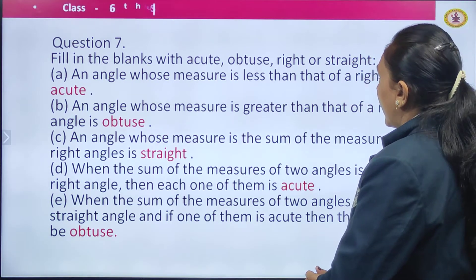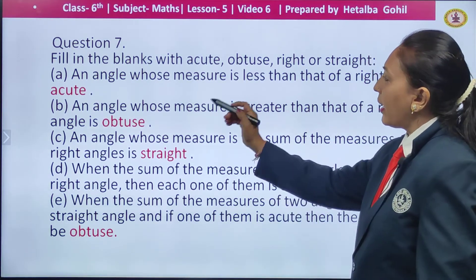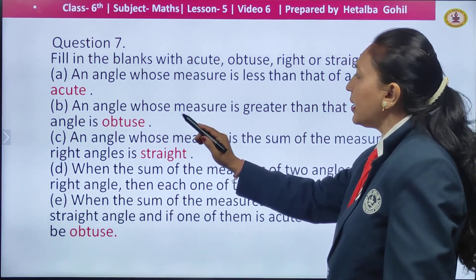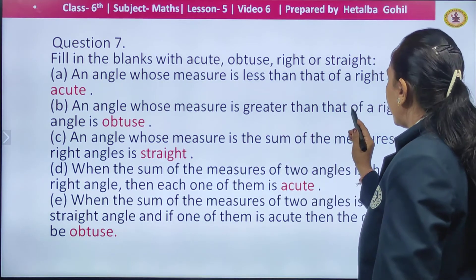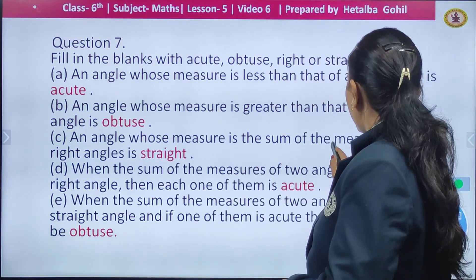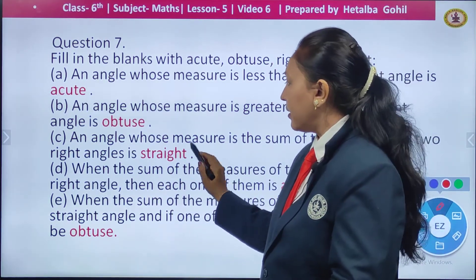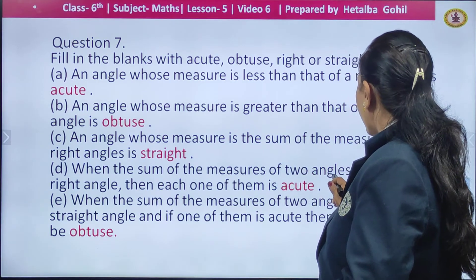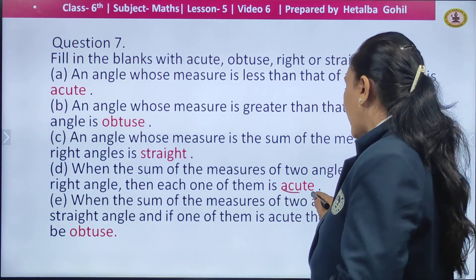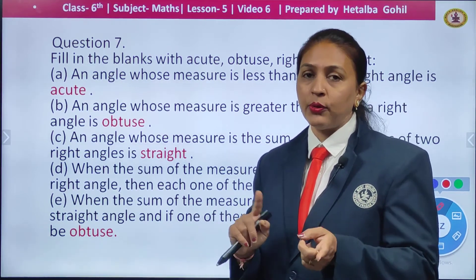Question number 7: fill in the blanks with acute, obtuse, right, or straight. An angle whose measure is less than that of a right angle is acute — less than 90 is acute. An angle whose measure is greater than that of a right angle is obtuse. An angle whose measure is the sum of the measures of two right angles — two right angles make 180 — that is a straight angle. When the sum of the measures of two angles equals that of a right angle, then each one of them is acute.